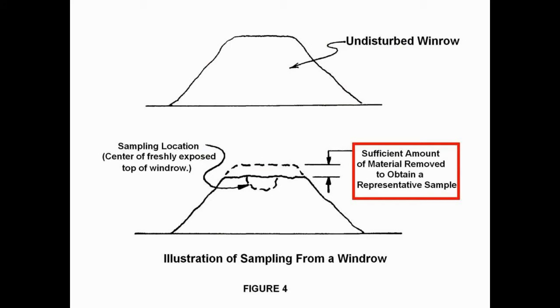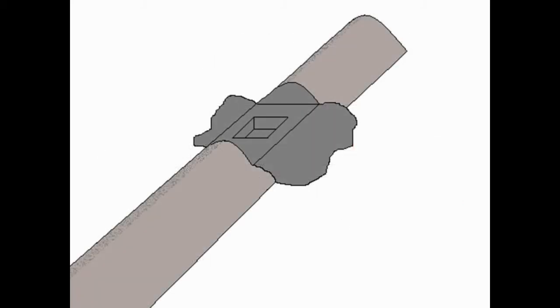The sample taken at each sampling location shall be one shovelful of material. Repeat the sampling as necessary at the required number of locations in the windrow to obtain the desired amount of material. The samples taken shall be combined.